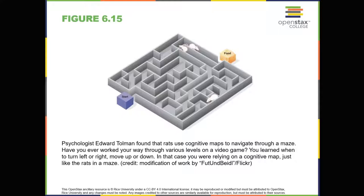After 10 sessions in the maze without reinforcement, food was placed in a goal box at the end of the maze. As soon as the rats became aware of the food, they were able to find their way through the maze quickly, just as quickly as the comparison group, which had been rewarded with food all along. This is known as latent learning. Learning that occurs, but is not observable in behavior until there's a reason to demonstrate it.